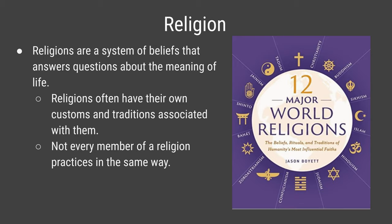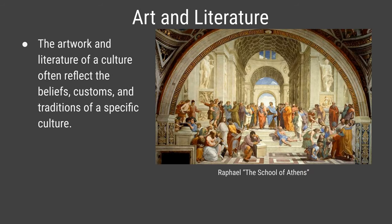This picture shows 12 of the world's most common or influential religions. These include things familiar in Western culture like Christianity, Judaism, and Islam, but also Buddhism, Sikhism, Hinduism, Confucianism, Zoroastrianism, Bahá'í, Shinto, Jainism, and Taoism. There are many religions around the world beyond just the few monotheistic ones we're most familiar with in Western culture.